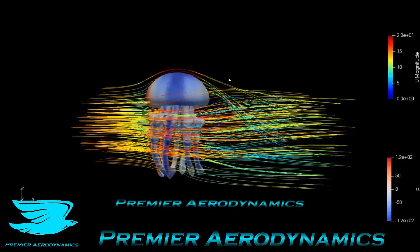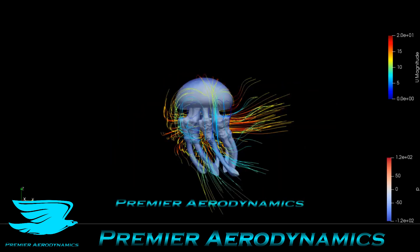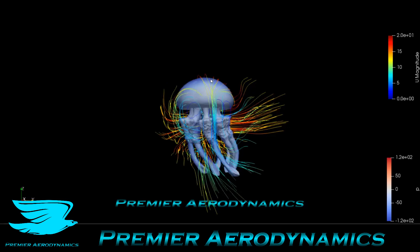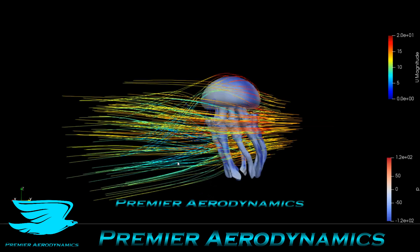These are streamlines going from left to right showing the velocity again, and as we play it will rotate. We can really see what we saw in the other plane — the flow over the top of the jellyfish really comes down, so that wake was coming down at a sharp angle. On either side of it the wake is not as angled downwards, and the flow going between the top parts of the tentacles doesn't go through much — it really goes around the top parts. Through the bottom parts of the tentacles though, the flow does go through a lot more.